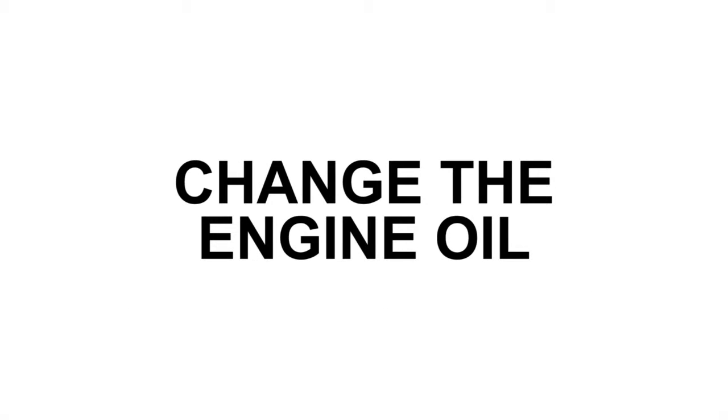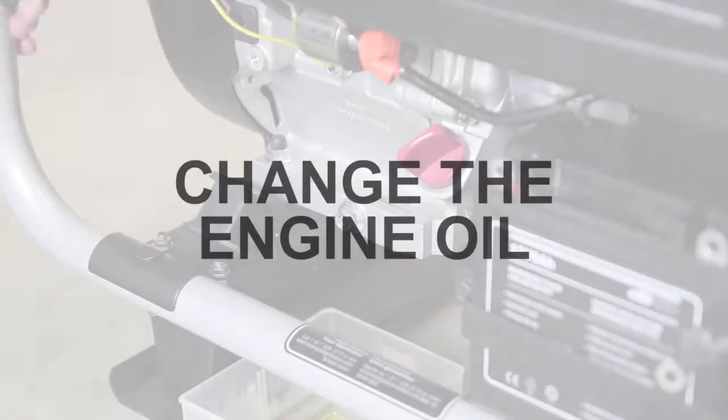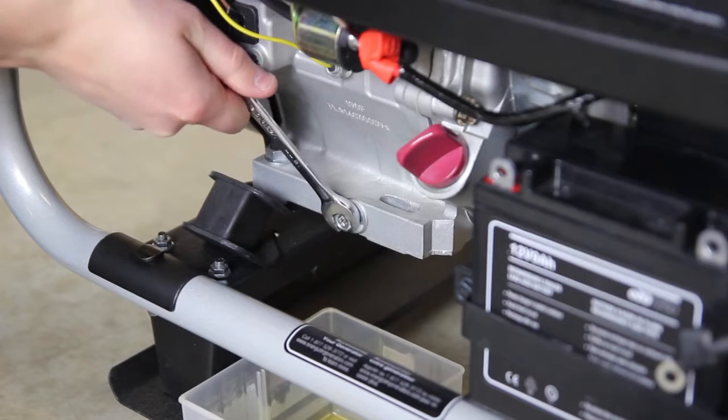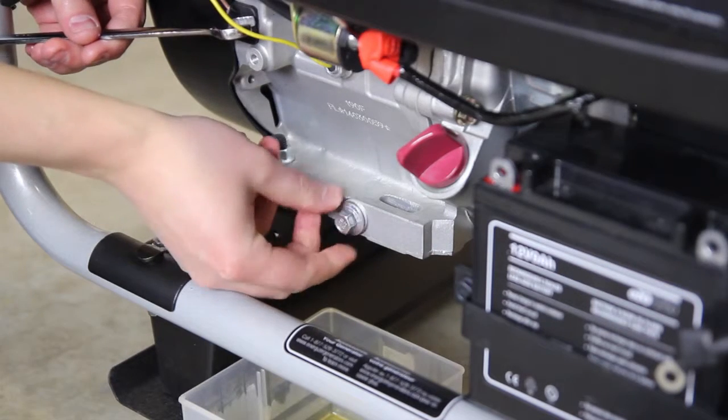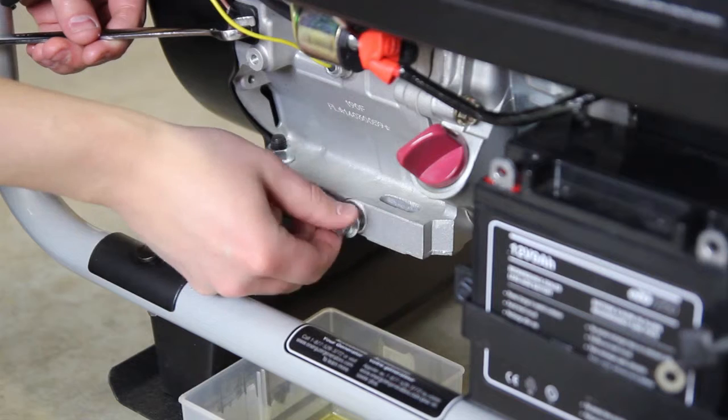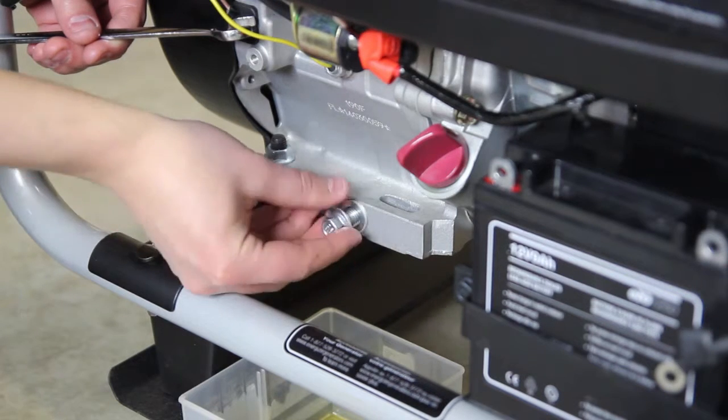Ensure the generator is on a level surface. Allow the engine to cool. Place a pan beside the generator. Remove the oil drain screw and allow the oil to completely drain into the pan.